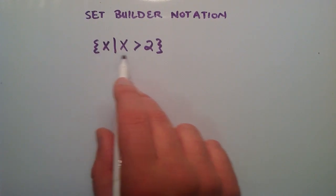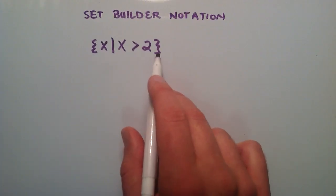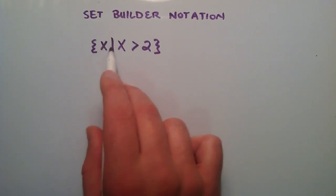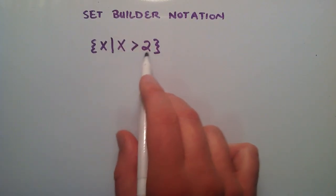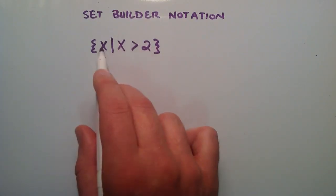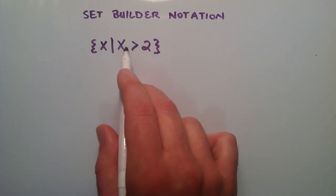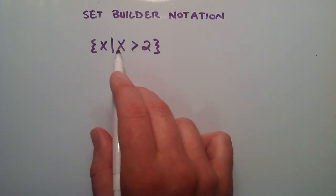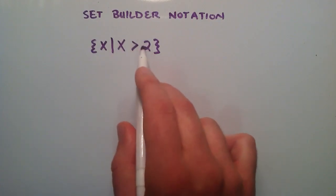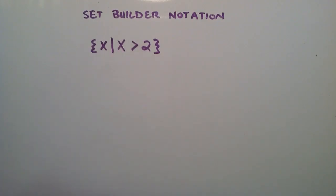So here's a set that uses set builder notation. Basically we have this vertical line here, and the information on the left-hand side of the vertical line is an arbitrary name for an element. The right-hand side shows the conditions for an arbitrary element to be part of our set. So the right-hand side says that all of the elements that are greater than the value 2 are included in our set.